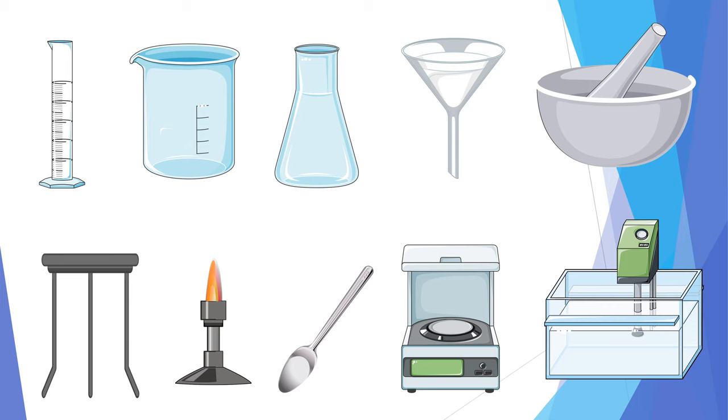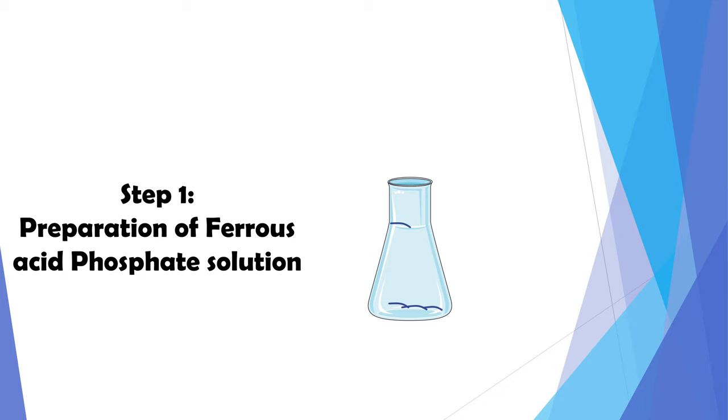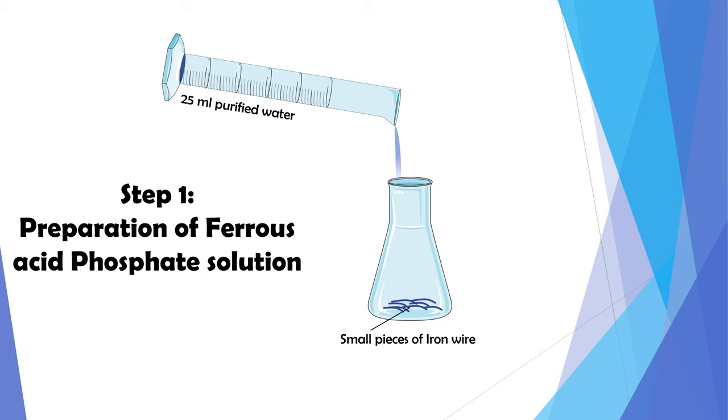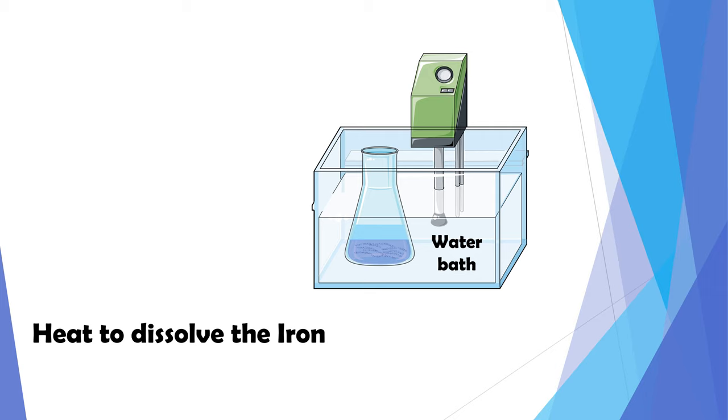Step 1 is preparation of solution of ferrous acid phosphate. For the preparation, heating on water bath is required to dissolve iron.